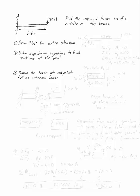Find the internal loads in the middle of the beam. First thing I'm going to do is draw a free body diagram of my entire structure. So I have 80 pounds going down, 10 feet of my beam, and the wall.